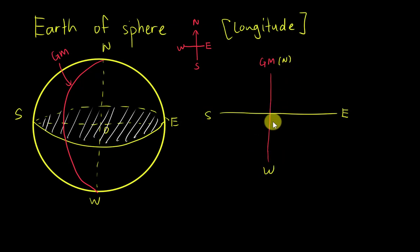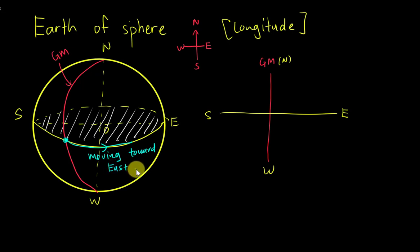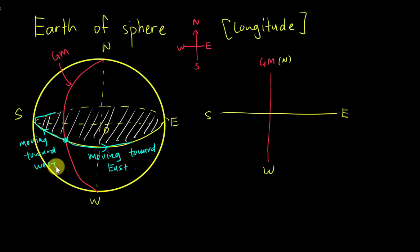It makes sense: if I start from these coordinates here and move in this direction, I am actually moving toward east. If I move to the other side, I am moving toward west. Because from the Greenwich Meridian, if you move this direction it's east, and move this direction it's west.